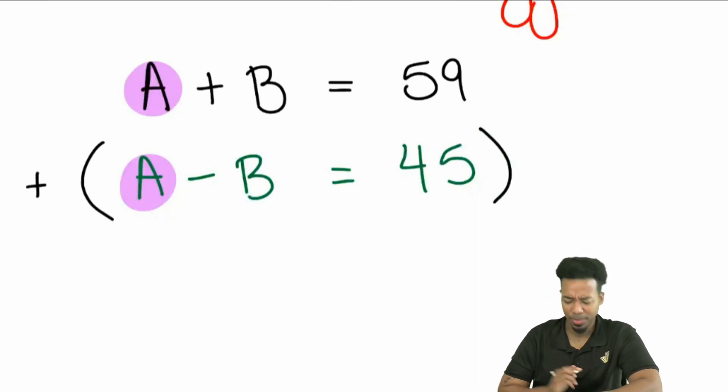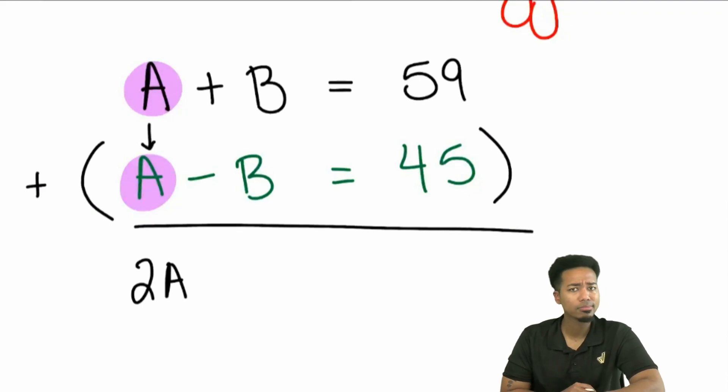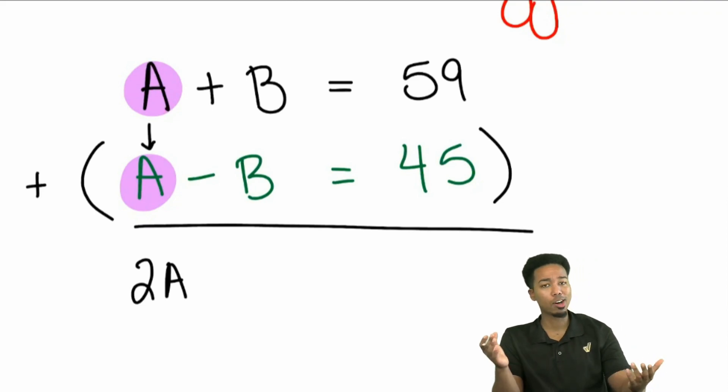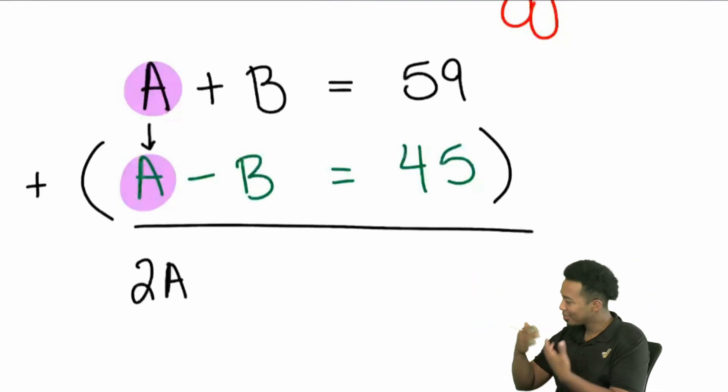But what I can do is I can actually take them together and I can eliminate the B. Watch this. If I add these equations together, help me out, everybody. If I add A plus A, what's that going to be? Okay. That's going to be 2A. My party people, when we have a positive B and a negative B being added together or B minus B, what ends up happening always? Yeah. It cancels out. If you have an equation and you have five and then you take away five from both sides, cancels out. If you have X and you subtract X from both sides, cancels out. If you have a B and you add a negative B or take away B, cancels out.